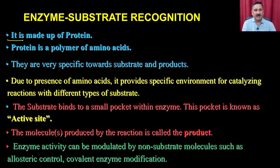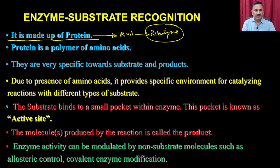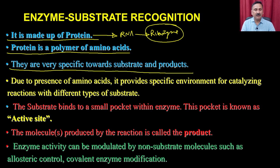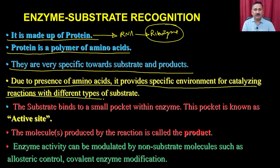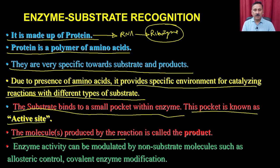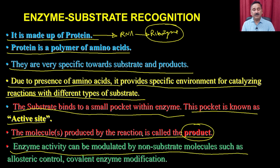Enzyme is made up of protein, and a minor fraction is made up of RNA — called ribozymes. Protein is a polymer of amino acids and is very specific towards the substrate and product. The amino acids provide a specific environment for catalyzing reactions, and the substrate binds to a small pocket within the enzyme called the active site. The molecule produced by the reaction is called the product. Enzyme activity can be modulated by non-substrate molecules such as allosteric molecules and covalent modifications.